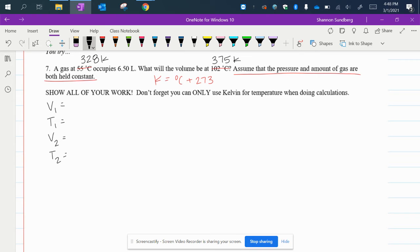V1 is 6.50 liters. T1 is 328 Kelvin. V2 is what I'm trying to find, and T2 is 375 Kelvin.